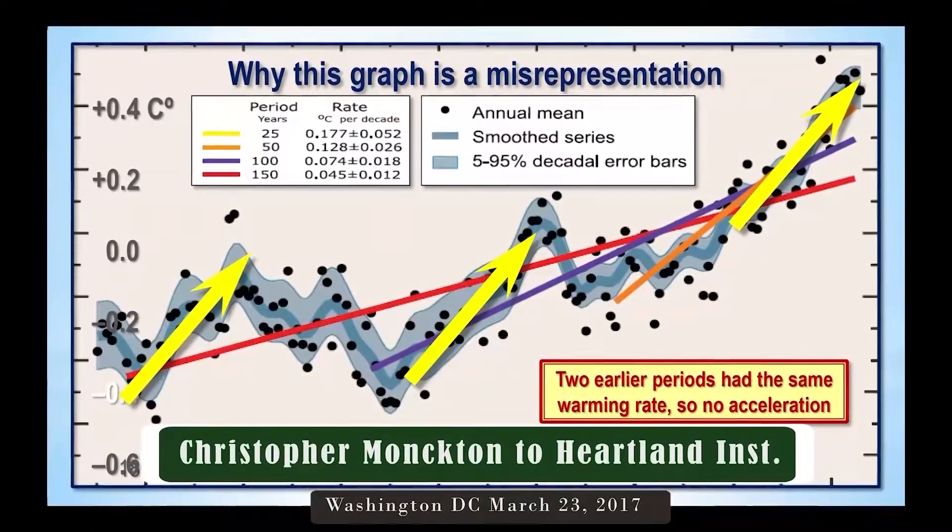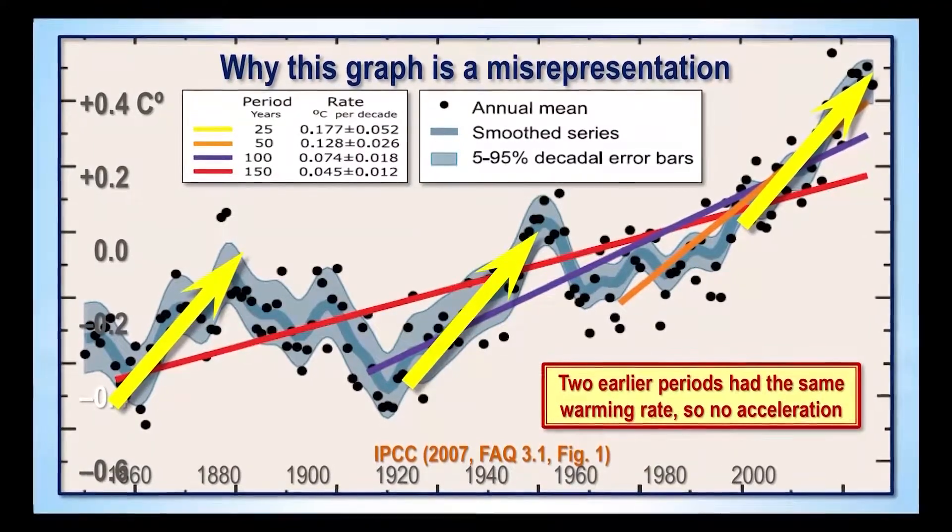An extraordinary thing about the models is that not even the alarmists say that they work. They're forever telling us the models failed to predict how bad things are, even though the models are carefully calculated to predict disaster almost no matter what data you feed into them. When they tell us over and over again that our climate is changing, that it is happening faster than they ever predicted. Even they don't defend the models' performance, nor should they, because the models can't explain the fact that the 20th century actually saw three fairly sharp warmings, each as sharp as the most recent one, punctuated by two fairly sharp coolings.